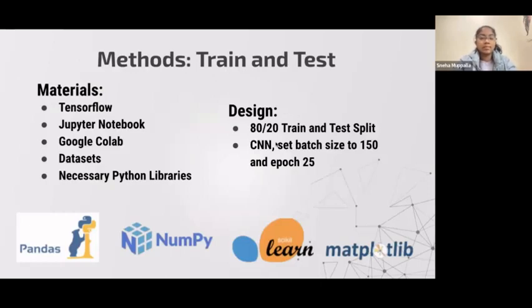So the last part of my method is the training and testing part. The materials I used are TensorFlow, Jupyter Notebook, Google Colab. These two are different environments which are very well known in machine learning. Then it's the datasets I used. In this case, I used ASV Spoof 2019 challenge dataset. And then finally, the necessary Python libraries. For instance, seen below are the images of some of the libraries I used: pandas, numpy, scikit-learn, and Matplotlib to get a detailed analysis of my results.